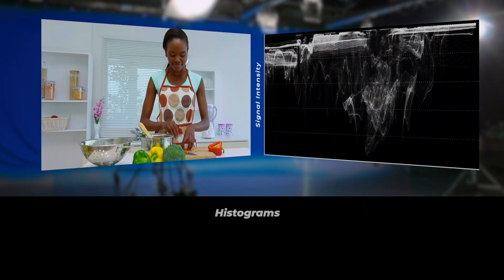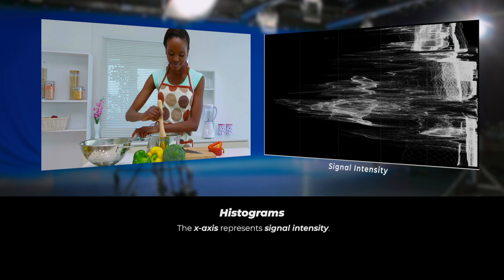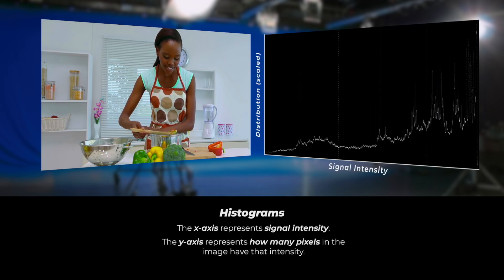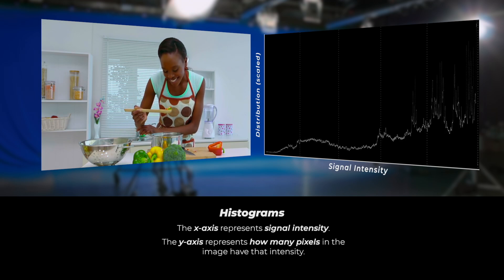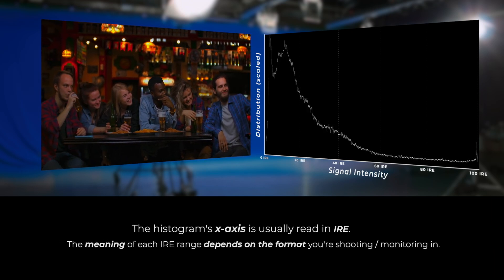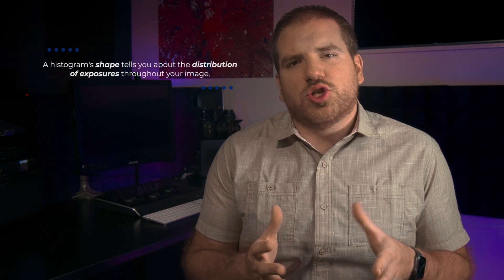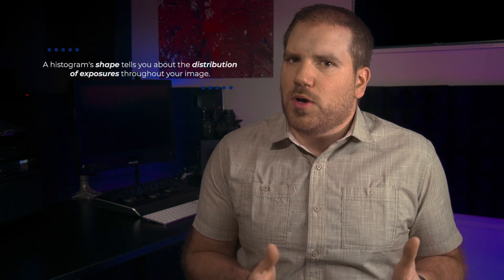Reading your histogram in HDR has a lot of the same benefits and cautions as reading your waveform monitor. The x-axis gives you signal intensity information, and the y-axis tells you how many pixels in the image have that intensity. Like the y-axis of the waveform monitor, the x-axis of the histogram is usually read out in IRE, and the meaning of the values depends on the format you're shooting in, or the scope is monitoring in. If you're used to using a histogram, you may be used to looking at the histogram shape to tell you about the distribution of exposures in your image.